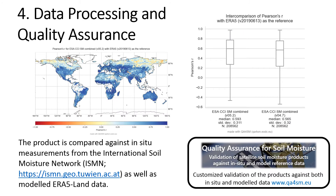Our datasets are thoroughly validated by independent project partners against both in situ and modeled datasets, and the validation report is produced for each version of the product. Here we can see plots of the spatial performance of version 5.2 as well as its overall performance in relation to the previous version. We also utilize the QA4SM online validation tool where our datasets are available for free and fully customizable validations. Our colleague has recorded a walkthrough video on how to register and perform validations with QA4SM, which can be found here at EO4Water.